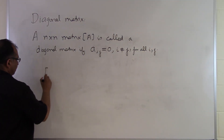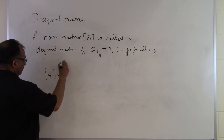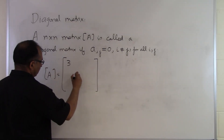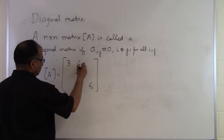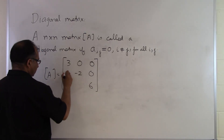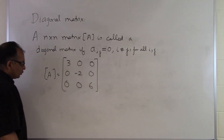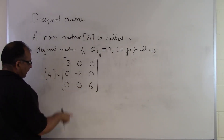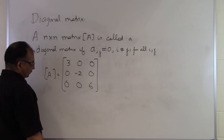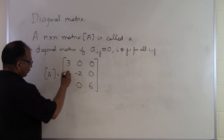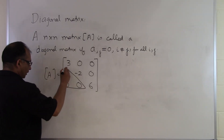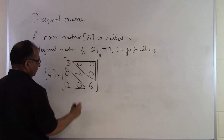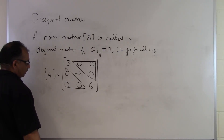Let's look at an example. I'll take a 3 by 3 matrix — let's suppose the diagonal has 3, minus 2, and 6, with all off-diagonal elements being zero. What makes this a diagonal matrix is not what's on the diagonal — those elements can be any number, including zero — but what's happening off the diagonal. If you look at the row number and column number of any of those off-diagonal elements, they are not the same.